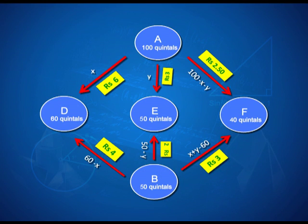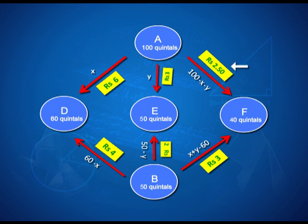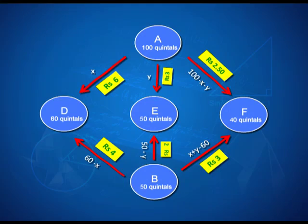An important aspect of this problem is the cost we want to minimize. Per quintal transportation costs are: A to D ₹6, A to E ₹3, A to F ₹2.50; B to D ₹4, B to E ₹2, B to F ₹3. The entire problem statement has been translated into this diagram. Now we identify the objective function and the constraints.